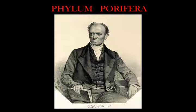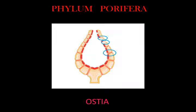Anatomy and type cells: Ostia are channels leading to the interior through the mesohyl, and in most sponges these are controlled by tube-like porocytes that form closable inlet valves.